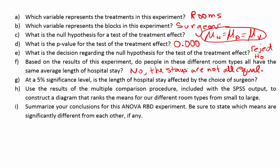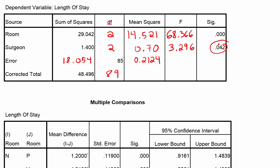Part G asks: at a 5% significance level, is the length of hospital stay affected by the choice of surgeon? Looking at the p-value for surgeon, our p-value is only 0.042, or about 4.2%, so it's a little bit less than alpha. Whenever your p-value is smaller than alpha, you reject the null hypothesis. So we conclude that surgeons seem to have some impact on the length of stay in the hospital.